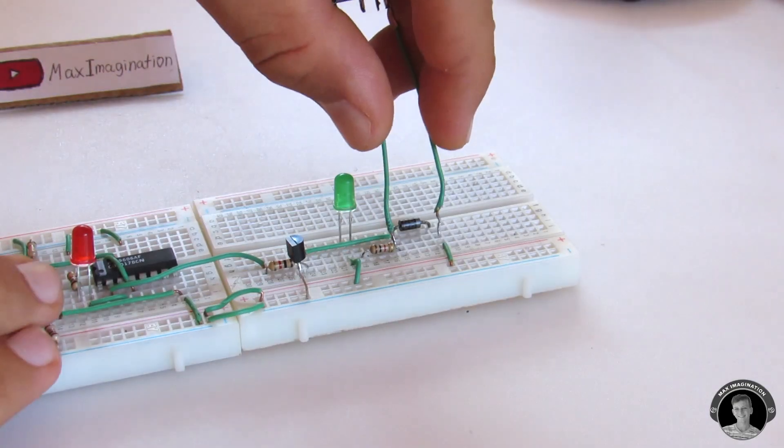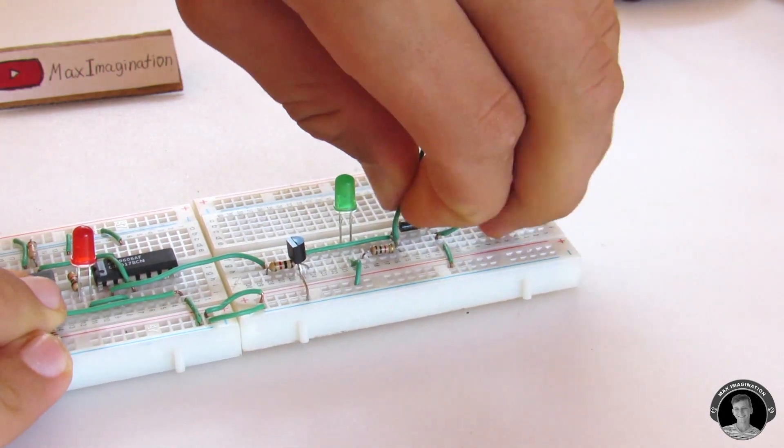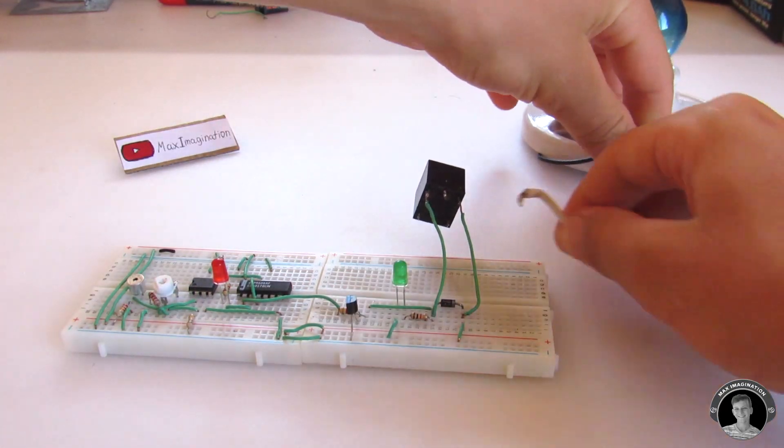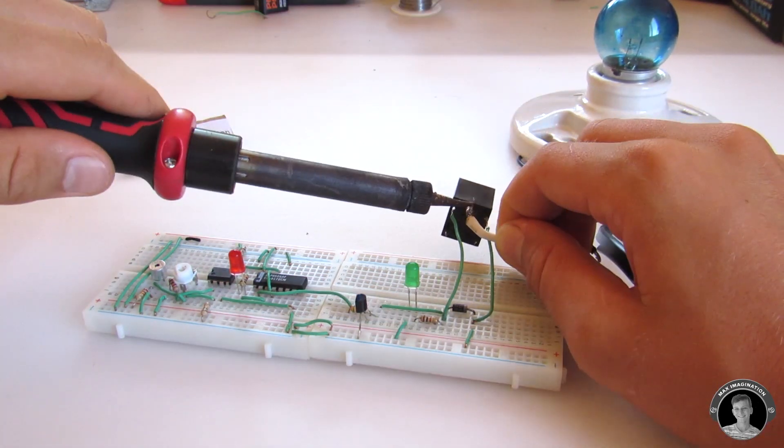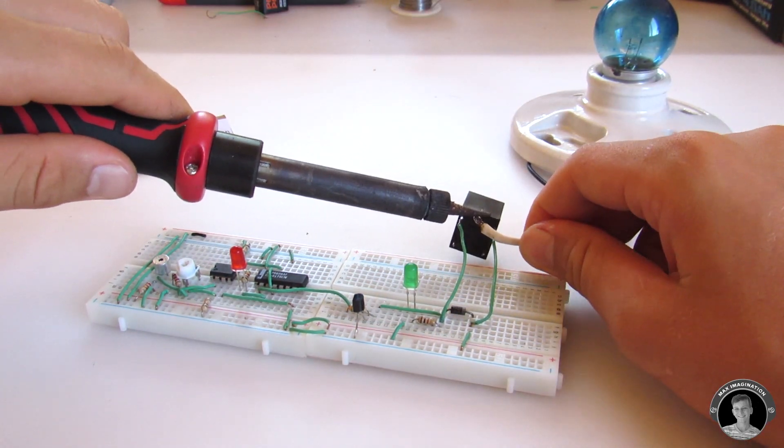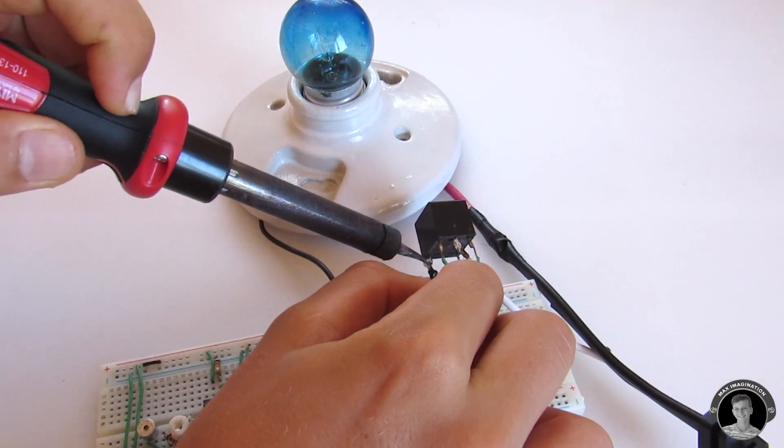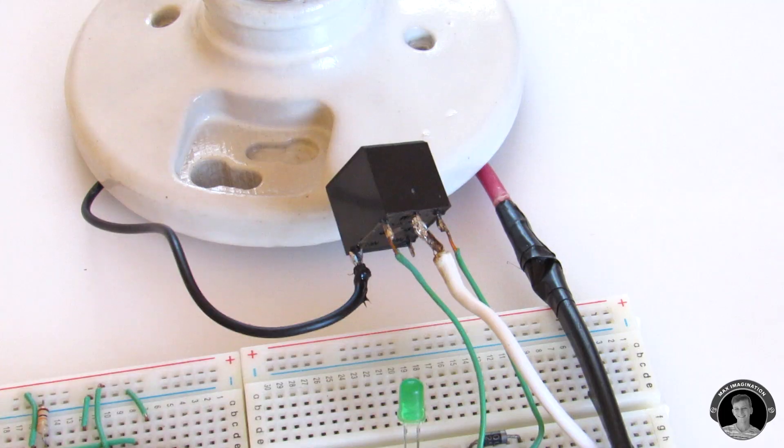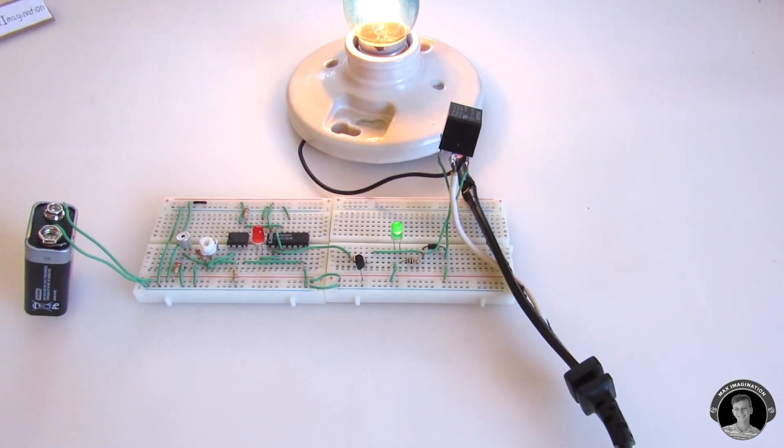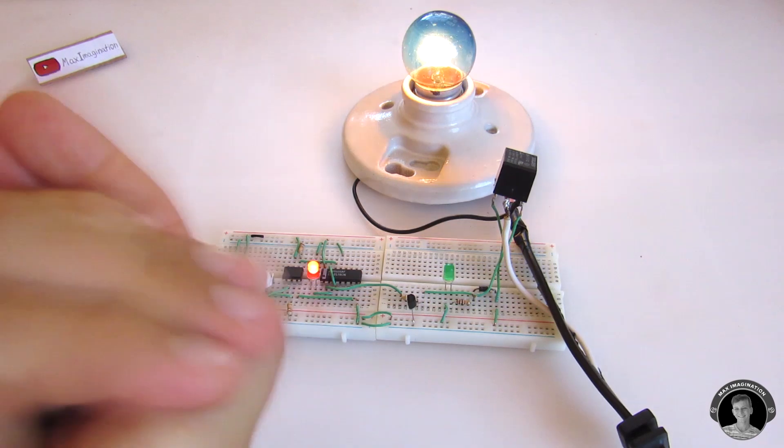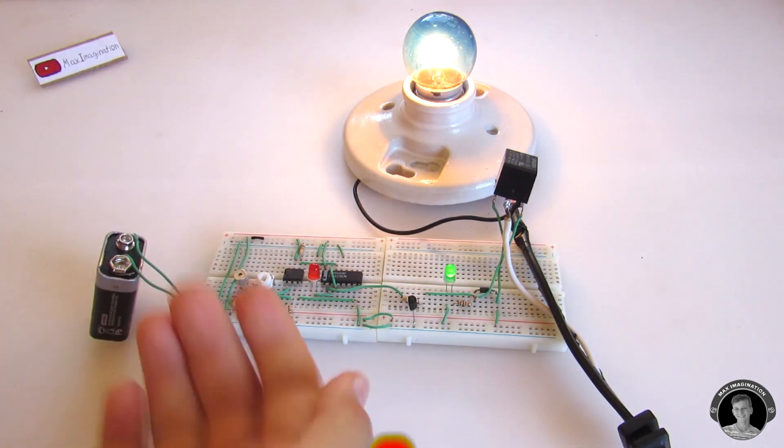Connect the two relay wires to each side of the 4007 diode. Connect one wire from the 110V input cable to the common relay pin. Then solder a wire coming from one end of the light bulb socket to the NC or normally closed relay pin. And the other wire that sticks out of the AC input cable goes to the other wire that points out of the light bulb socket.